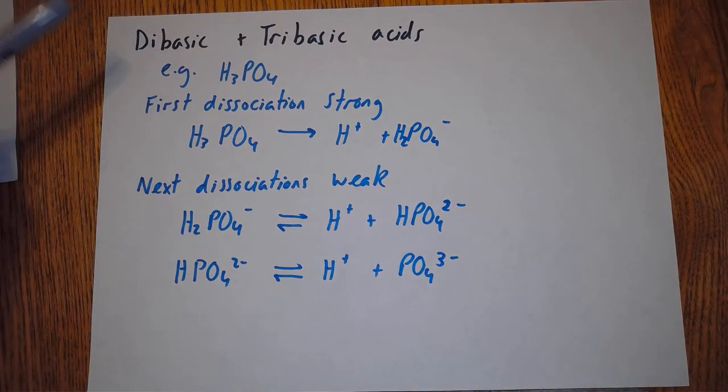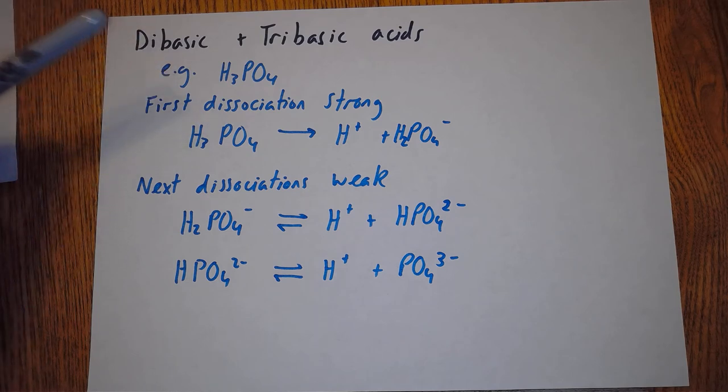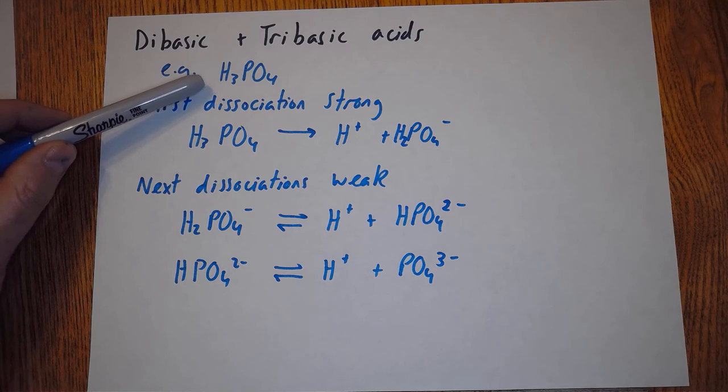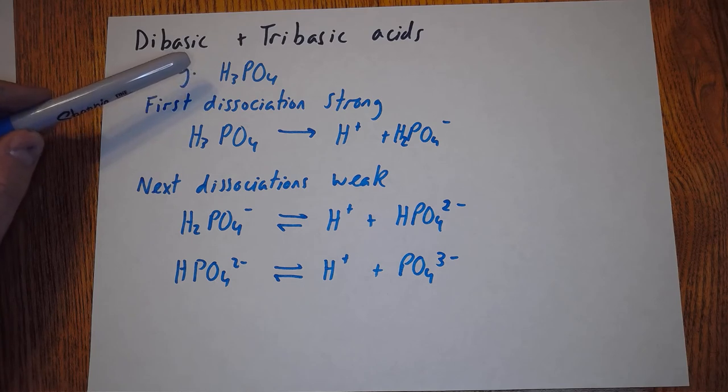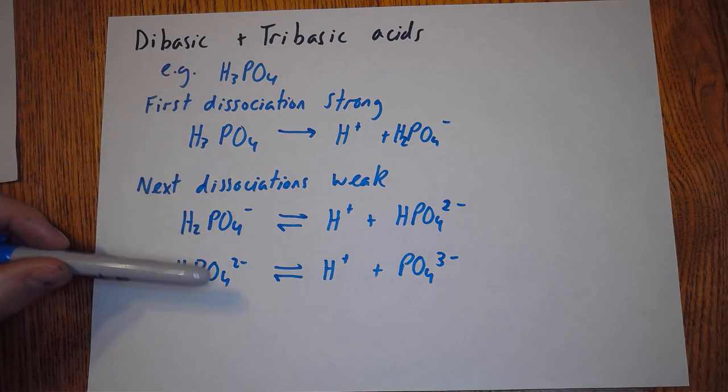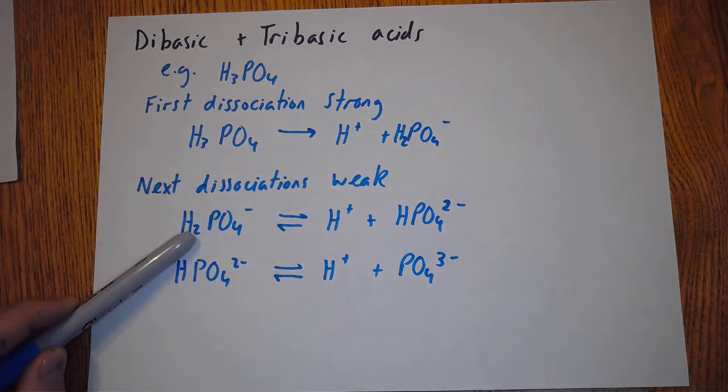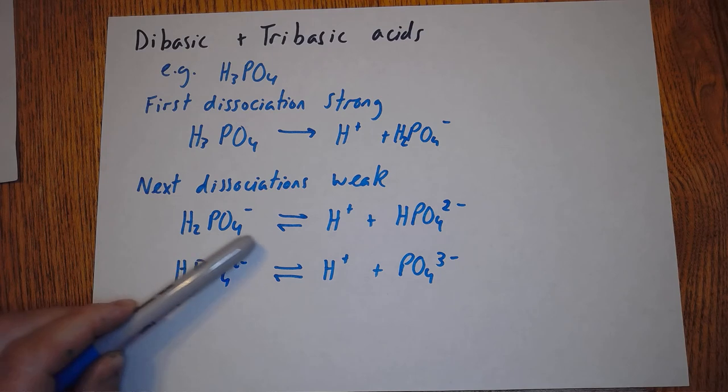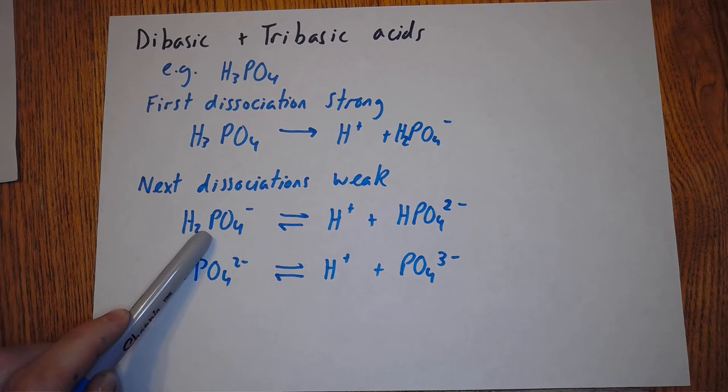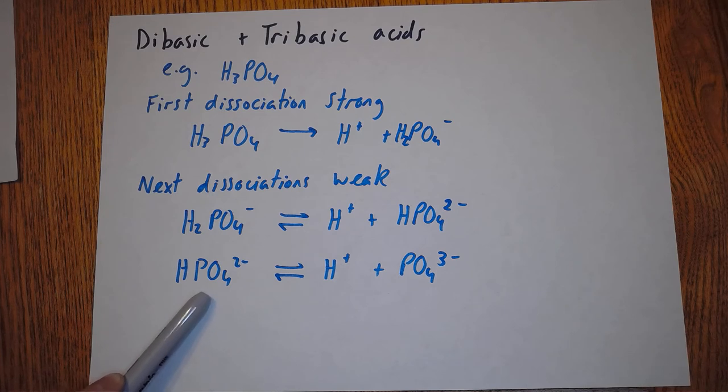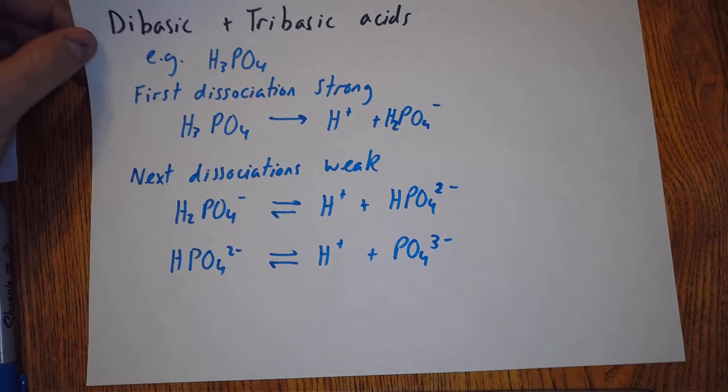So as we mentioned before, dibasic and tribasic acids. Phosphoric acid is a very strong acid, but phosphoric acid does not have three strong H+ to donate - it's got one, and the next two dissociations are weak dissociations. Here's the first one - the phosphoric acid loses its first H+, and then that ion can lose an H+ as well, but it's reversible now because it's actually quite hard to get the H+ to leave a negative ion. It's even harder to get it to leave a 2- ion, so this last dissociation is even weaker than this one.